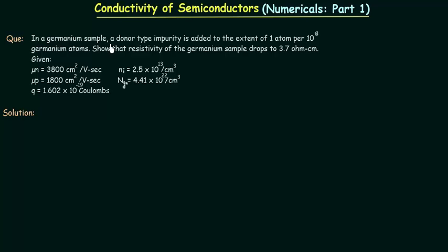In a germanium sample, a donor type impurity is added to the extent of one atom per 10 to the power 8 germanium atoms. Show that resistivity of the germanium sample drops to 3.7 ohm centimeter. We are given: mu_n is the mobility of electrons, mu_p is the mobility of holes, q is the charge on one electron, n_i is the concentration in case of intrinsic semiconductors, and N_ge is the concentration of germanium in the sample.